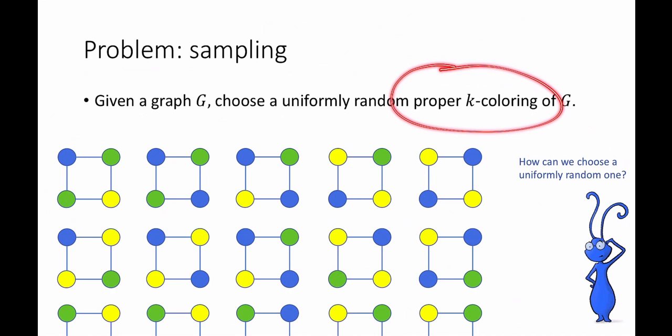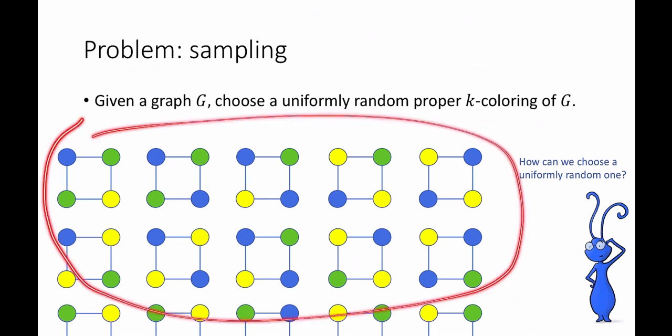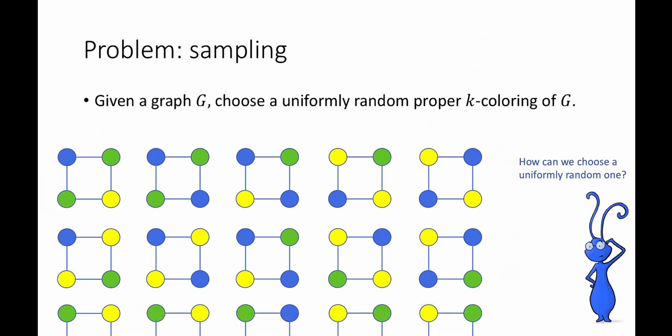By proper K coloring, I mean a way to color all the vertices of G so that no two adjacent vertices have the same color. It should not be at all obvious how to do this efficiently. One way would be to enumerate all of the proper K colorings and then pick one at random, but that would take a really long time, depending on the graph.